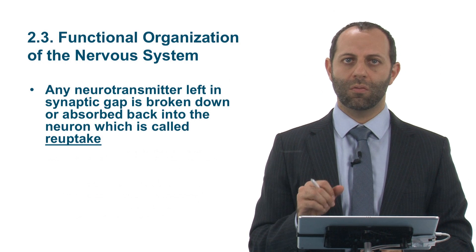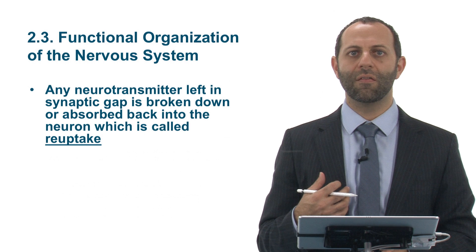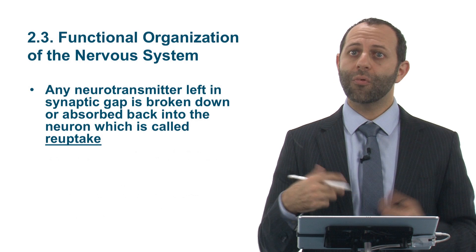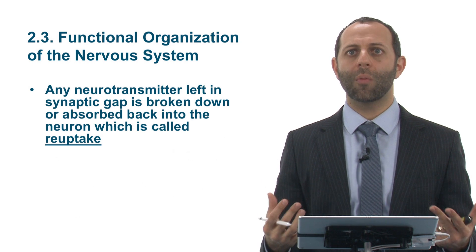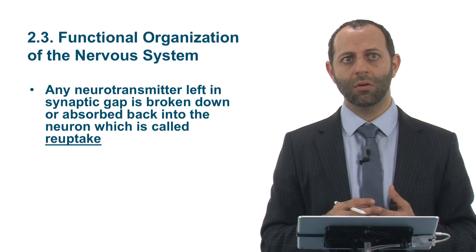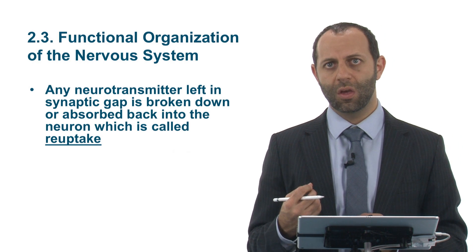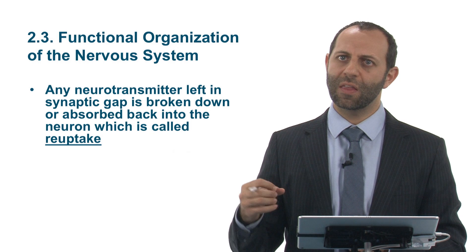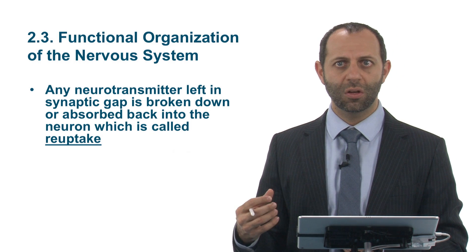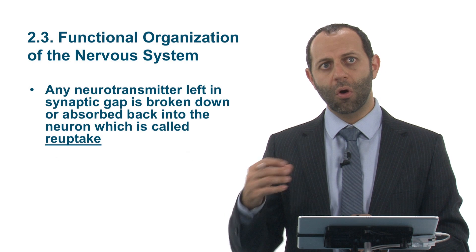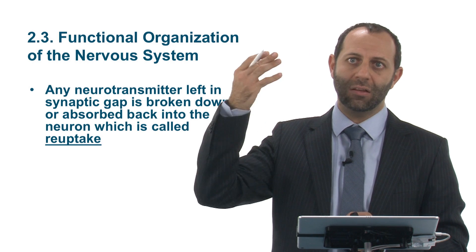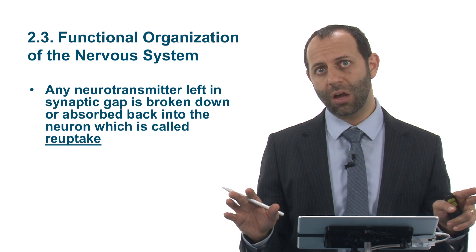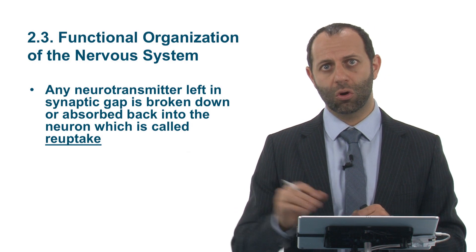Any neurotransmitter left inside the gap — any of these chemicals remaining in that space — are broken down and absorbed back into the neuron. This process is called reuptake. It's like a recycling system: anything left over is either reabsorbed into the original neuron or destroyed and no longer used.